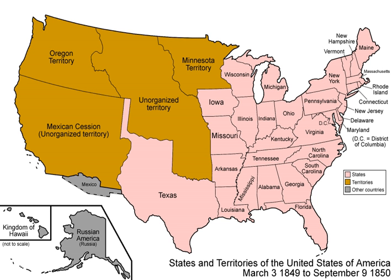The New Utah Territory and New Mexico Territory were allowed, under popular sovereignty, to decide whether to allow slavery within their borders. In practice, these lands were generally unsuited to plantation agriculture, and their settlers were uninterested in slavery.